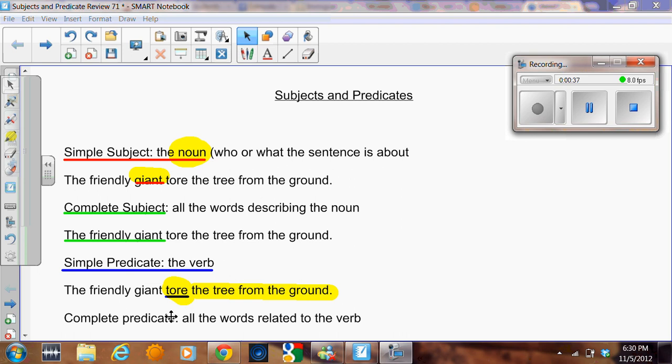The complete predicate contains all the words related to the verb that give you additional information about the verb. They answer questions. For example, the giant tore what? The giant tore the tree. From where did the giant tear the tree? From the ground. They're clarifying the action of the verb.